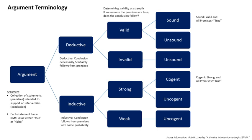Unlike deductive arguments, inductive reasoning allows for the possibility that the conclusion is false, even if all of the premises are true. Instead of being valid or invalid, inductive arguments are either strong or weak, which describes how probable it is that the conclusion is true. Another crucial difference is that deductive certainty is impossible in non-axiomatic systems, such as reality, leaving inductive reasoning as the primary route to probabilistic knowledge of such systems, given that if A is true then that would cause B, C, and D to be true.